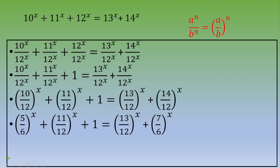You can also simplify 10 over 12 and 14 over 12, so you end up with (5/6)^x + (11/12)^x + 1 = (13/12)^x + (7/6)^x.